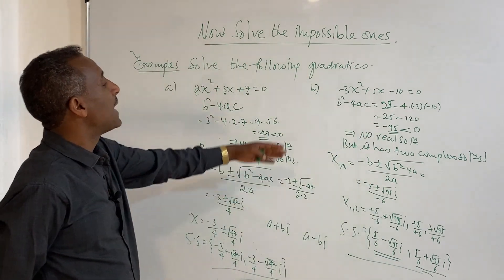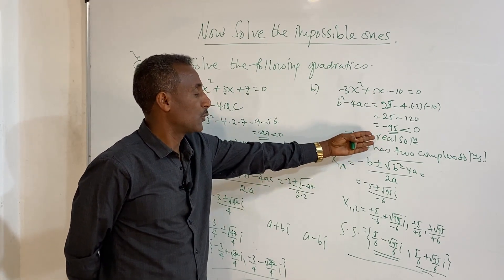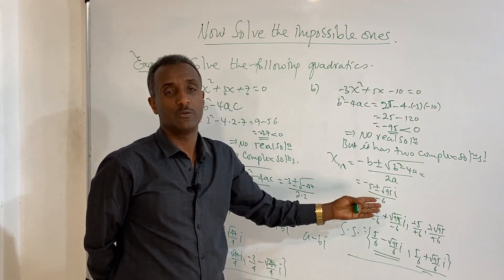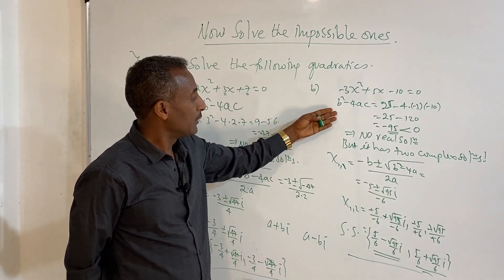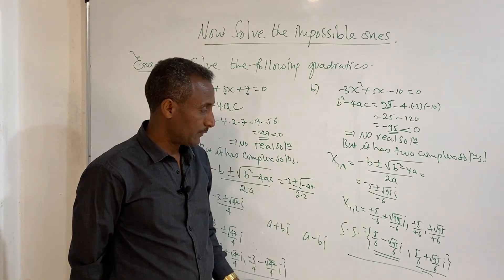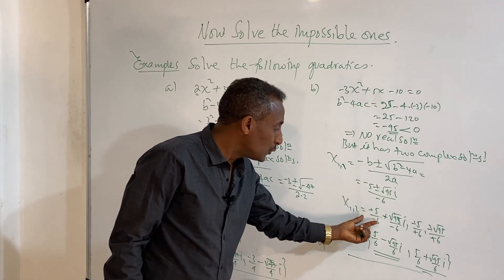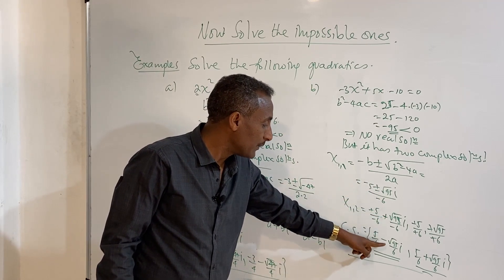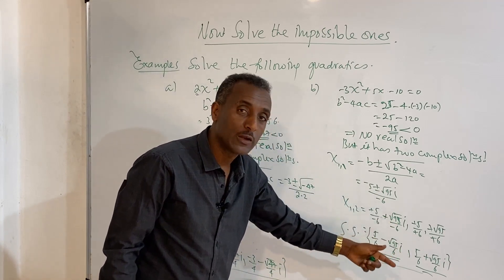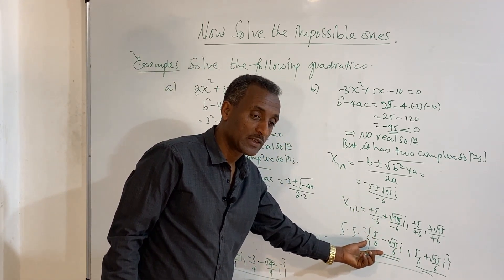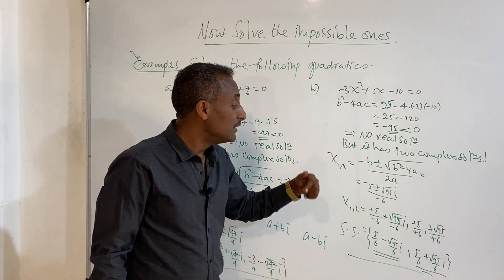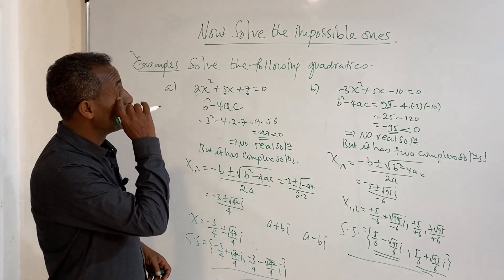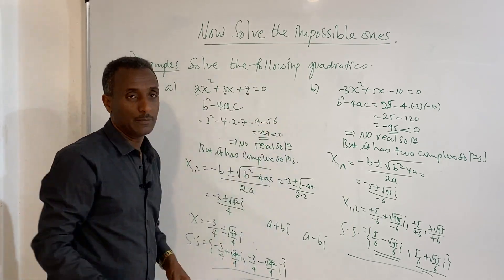And here we have the answer to this question. The solutions are complex solutions. Our solution is a plus bi and a minus bi. If one complex number is the root of a quadratic, then the conjugate of the complex number is also the root of the same equation. This is how we solve the impossible quadratic equations under the complex numbers. Thank you for watching.